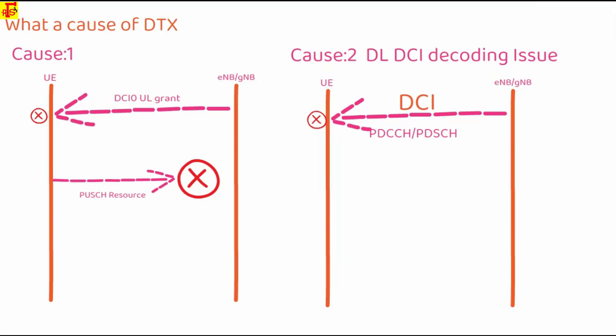When UE fails to decode the downlink DCI, it does not even know that eNodeB has transmitted PDCCH to it. Because if DCI fails, then how will UE read the PDCCH? So eNodeB also doesn't know that UE has failed to decode the downlink DCI.